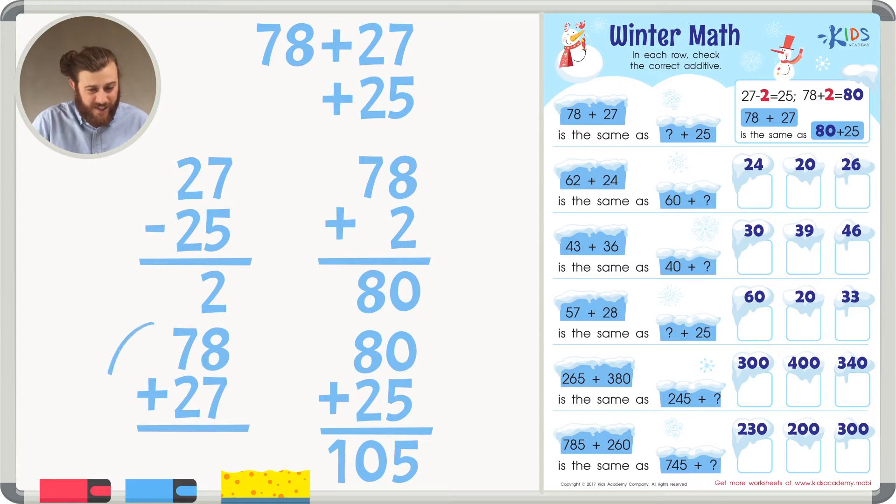In order to answer 78 plus 27, we first have to add 7 plus 8, and then we have to add 7 plus 2. This is a way more difficult problem. That's why in this worksheet, we're going to practice making friendly numbers. Let's take a look at our first question.